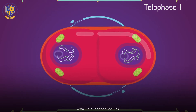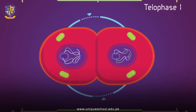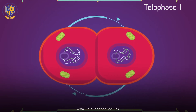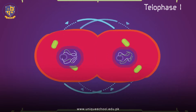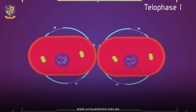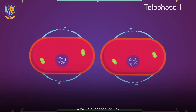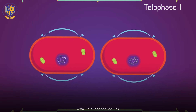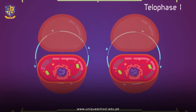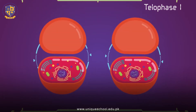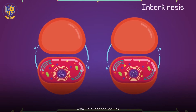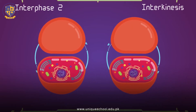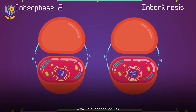Cytokinesis — the pinching of the cell membrane in animal cells, or the formation of the cell wall in plant cells — occurs, completing the creation of two daughter cells. Sister chromatids remain attached during Telophase I. Cells may enter a period of rest known as interkinesis or Interphase II. No DNA replication occurs during this stage.